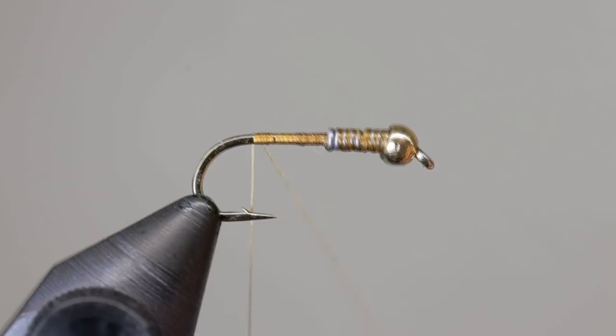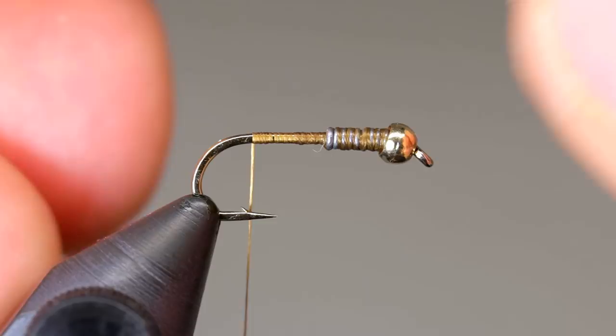The tail is formed from two brown goose biots. Turn one of them over so they naturally curve away from one another. You can then align the tips by sliding your fingers up and down, moving the biots with them.